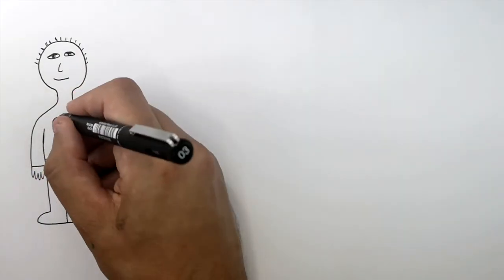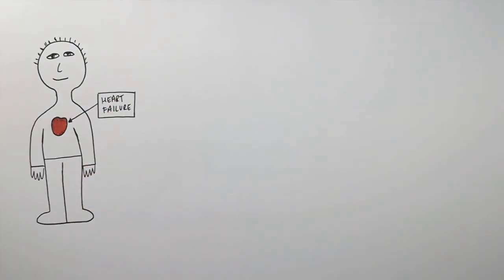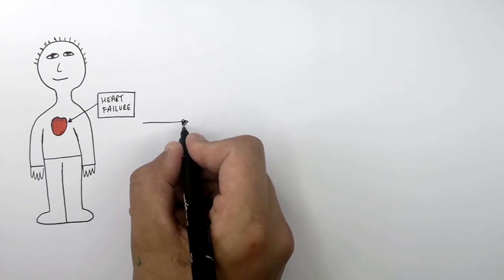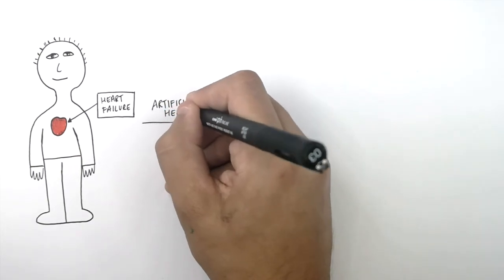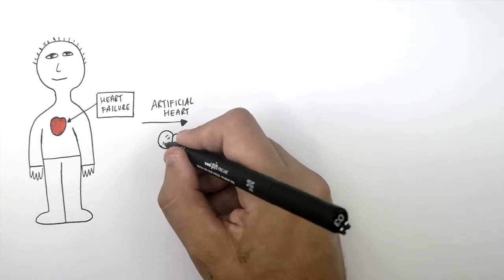This person has had a heart failure. Their heart has stopped working properly and they need a new heart. If they can't find a matching heart for a transplant, they might need an artificial heart during the waiting time for a new heart before it's transplanted into them.